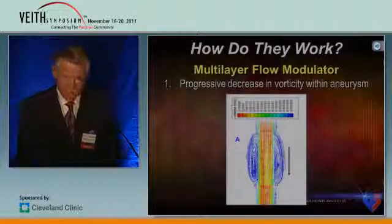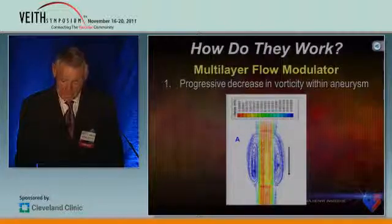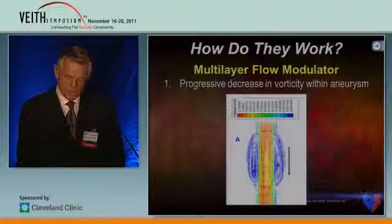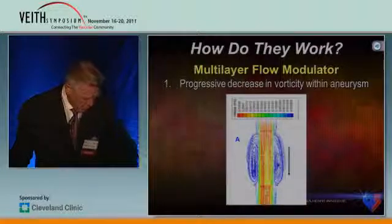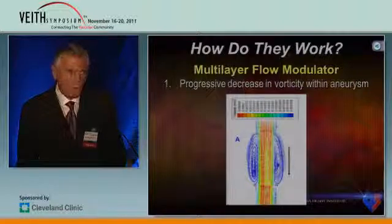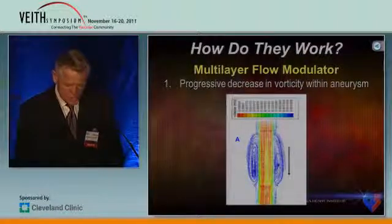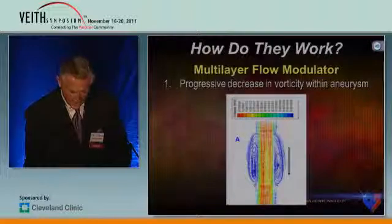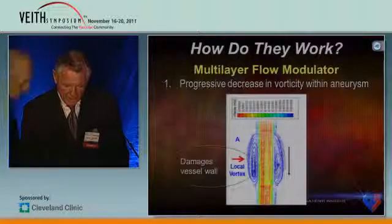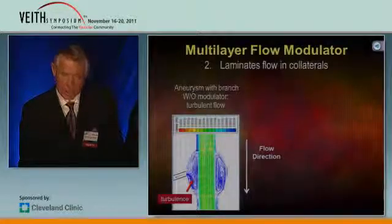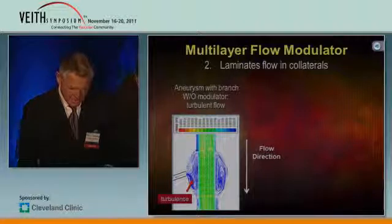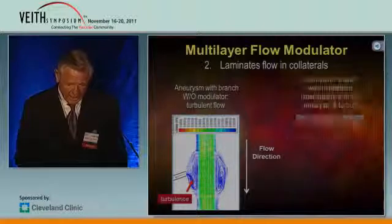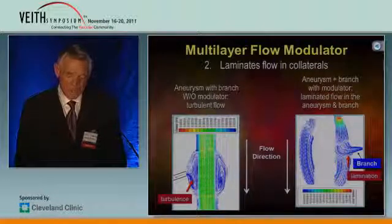Just to answer the question of how does it work — you've heard a couple of explanations already. Just to give you a better idea: it causes a progressive decrease in the vorticity within the aneurysm. If you know what happens in these aneurysms with the vortex pressure, that's what damages the intima and causes the expansion. What this does is to modulate this. Instead of having the turbulent flow you see here, what it does is to regulate that, and it turns the flow with the modulator and laminates this flow into the side branches.